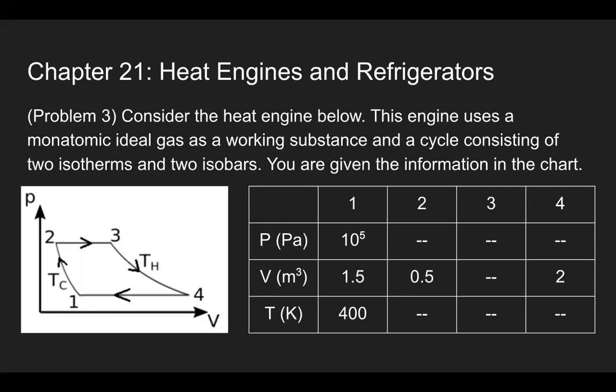We are given information in the chart. From the PV diagram, the two isobars are the horizontal lines because pressure remains constant — that's where the flat line comes from. The isotherms are more complex curves, as you can see: the curve from one to two looks different compared to three to four. At point one we're given pressure, volume, and temperature. Volume is also given at points two and four.